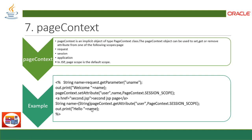`pageContext` is an implicit object of type PageContext class. This object can be used to set, get, or remove attributes from one of the following scopes: page, request, session, or application — with page being the default scope. This allows you to maintain specific parameters of the application within a defined scope using the pageContext object.